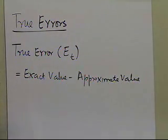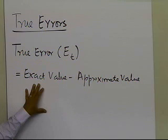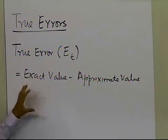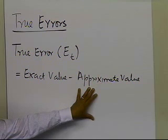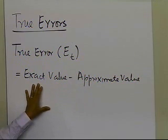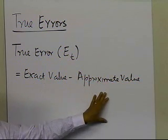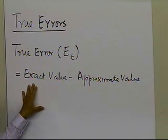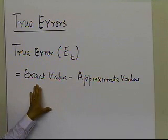The question arises: why do we need to learn about true errors when we need the exact value for calculating the true error? Since numerical methods are approximate methods, if I use one to find an approximate value, I won't know the exact value — and if I did, I wouldn't be calculating an approximation in the first place. However, if you are developing a numerical method, you do need to test it against something you already know.